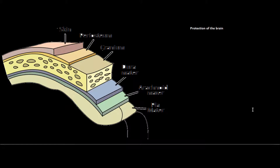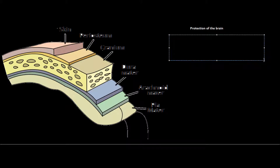Welcome to my second neurology video. In this video I'm going to briefly introduce the different structures that protect the brain. The diagram shows the skin, the periosteum, the cranium, the dura mater, the arachnoid mater, and the pia mater. We're not going to talk about the skin, the periosteum, and the cranium — we'll address those in later videos. This video will mainly focus on the three structures classified as the meninges: the dura mater, the arachnoid mater, and the pia mater, as well as the subarachnoid space just beneath the arachnoid mater.